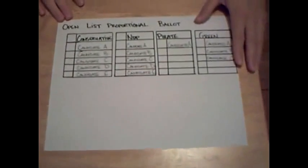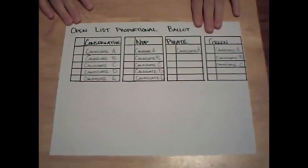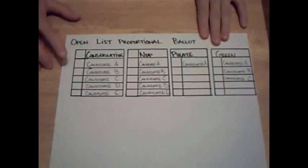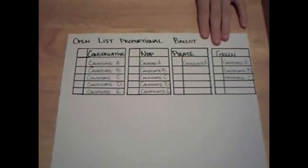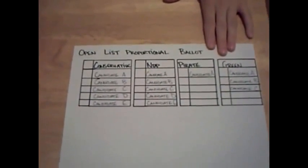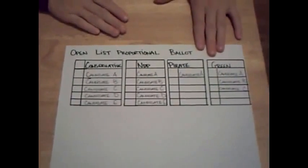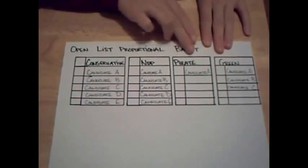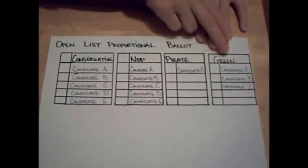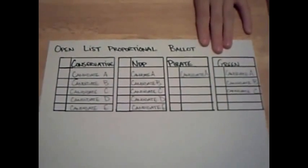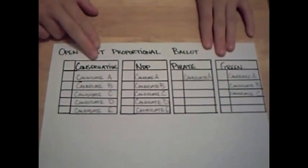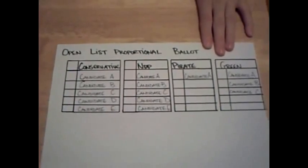And over here, we have a sample ballot from Open List Proportional Representation. In this system, the ridings will be resized to have more than one candidate running per riding. In this example, we have five seats available for this riding, and thus each party was told they could run five candidates. So the Conservatives are running five candidates, the NDP are running five, the Pirate Party has only chosen to run one, and the Green Party has chosen to only run three candidates. On election day, voters get to vote once, and they will choose not only the party that they wish to represent them, but which specific candidate within that party.